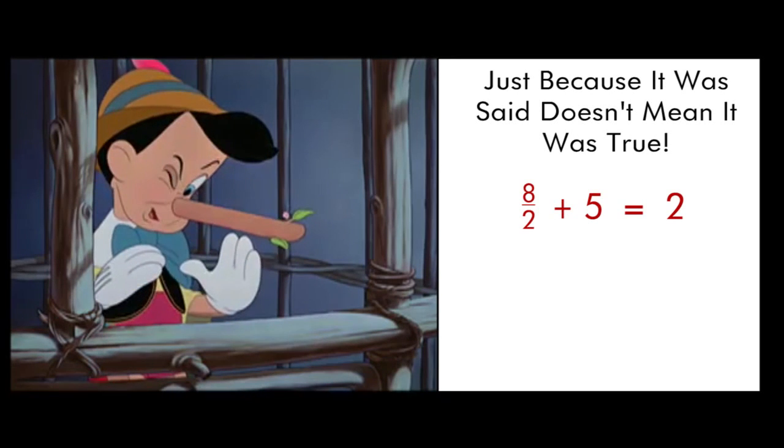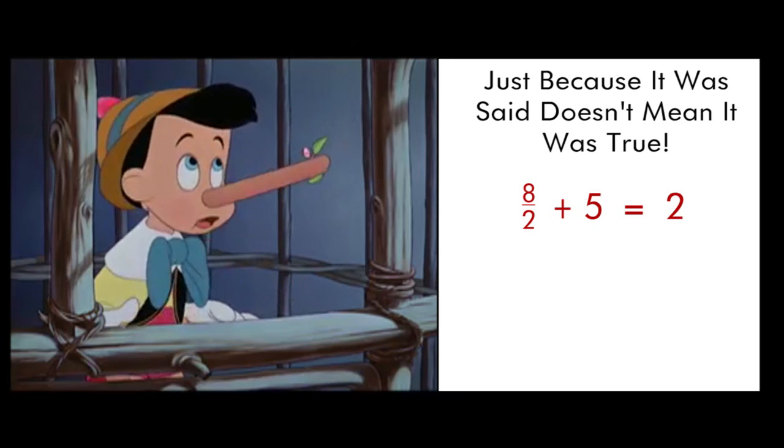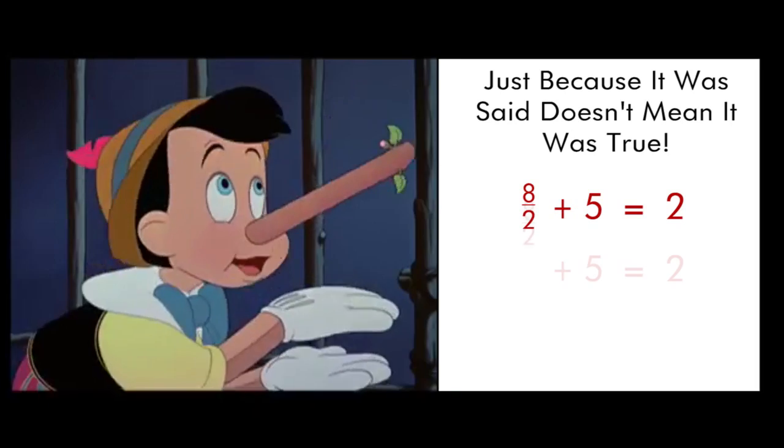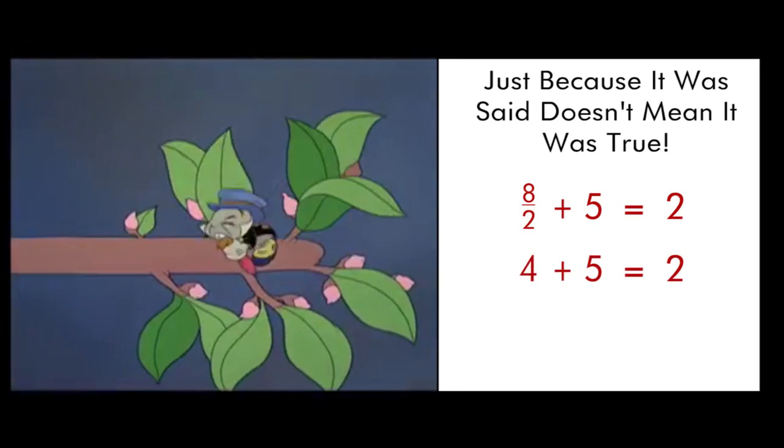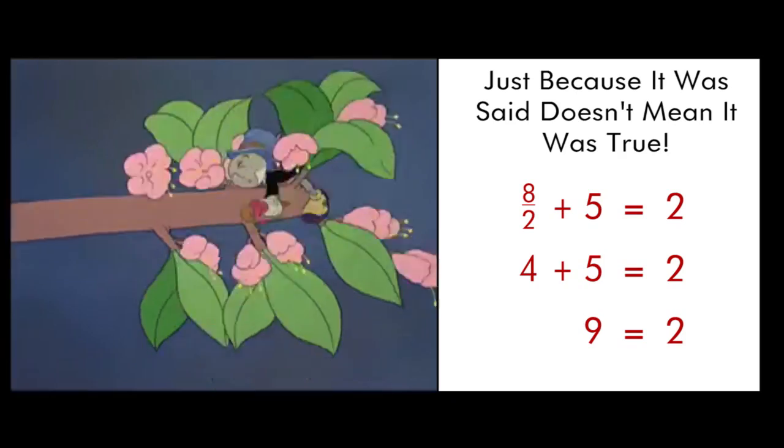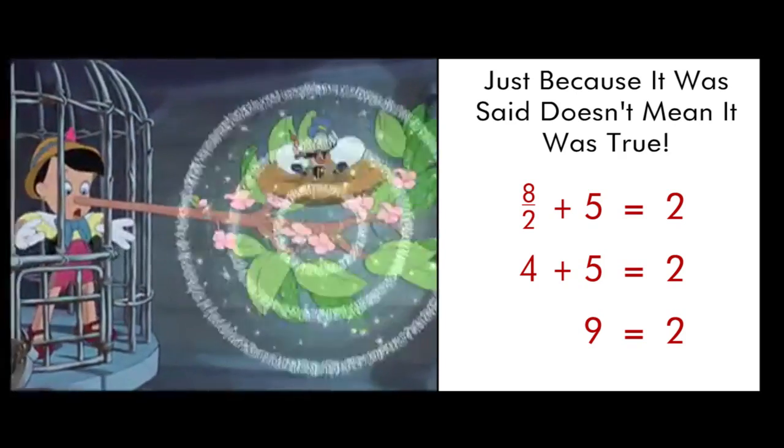For example, 8 ÷ 2 + 5 = 2 is an equation. It has an equal sign and two expressions, one on either side of that equal sign. However, it is not true. Just as with spoken and written English, we must be very careful that we communicate honestly and truthfully.